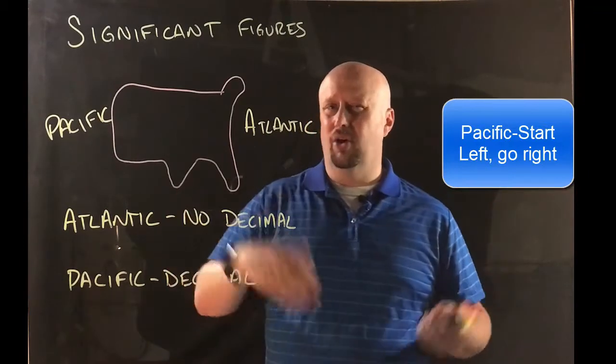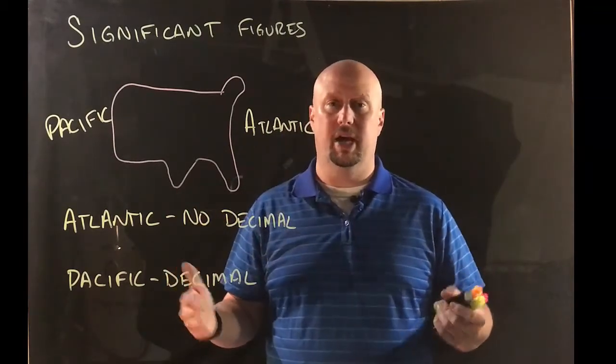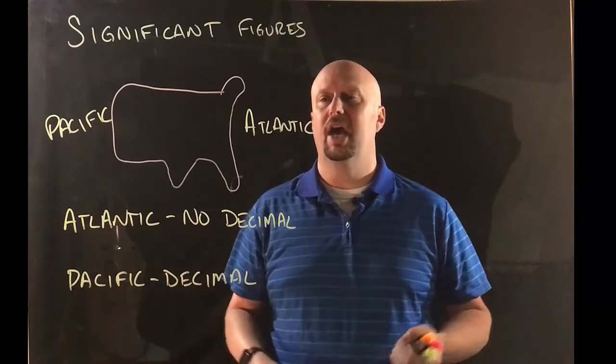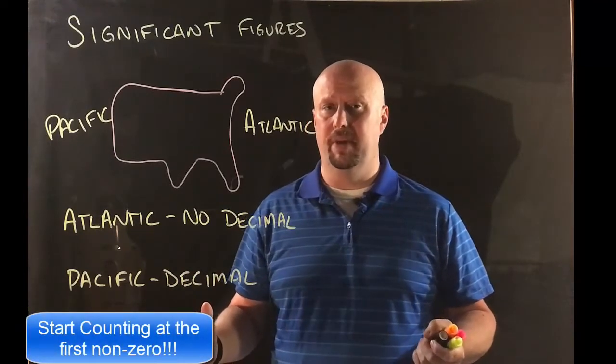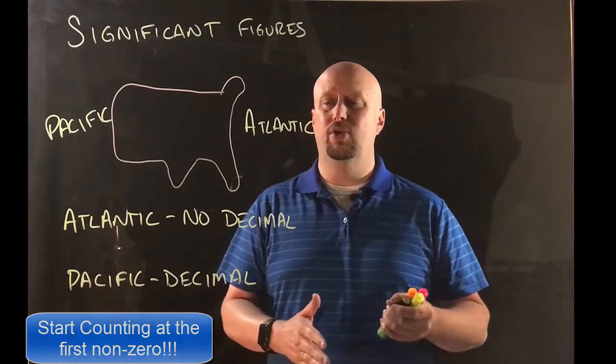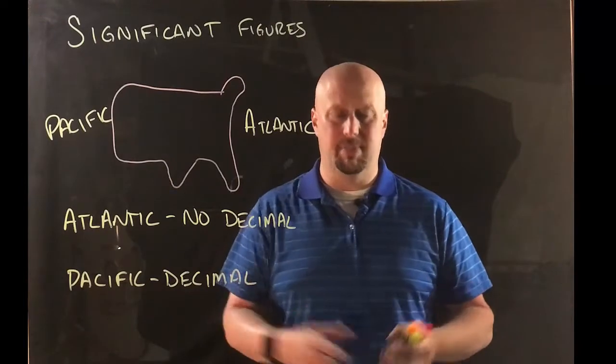Now what do I mean by go to the left and go to the right? That means that you start counting your significant figures, you start counting the numbers at the first non-zero digit. And then once you get to a non-zero digit then you keep counting, no matter if it's zeros or non-zeros.